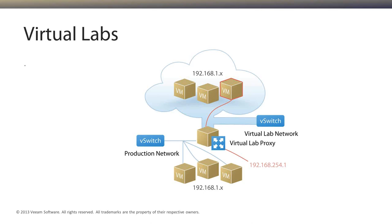Great question — so when you spin up these virtual machines, data is being modified. Where does it go? Veeam takes what we call delta files — essentially log files — and puts them onto an NFS data source. They reside there until you dispose of the virtual lab, at which point the changes are discarded. The actual backup itself never gets modified, changed, or updated. All the deltas get written off somewhere else and get discarded when you're done. On your Veeam backup server, you'll have a repository locally associated to it, and they'll all write to that repository.